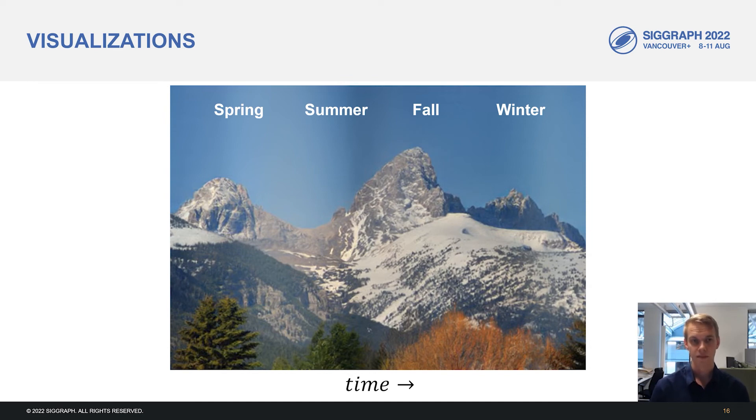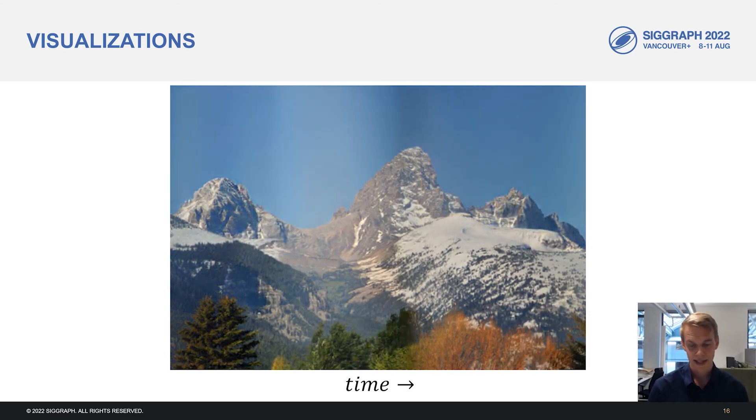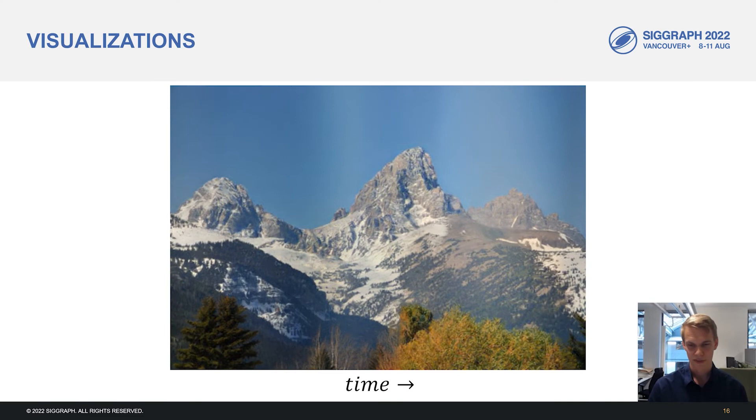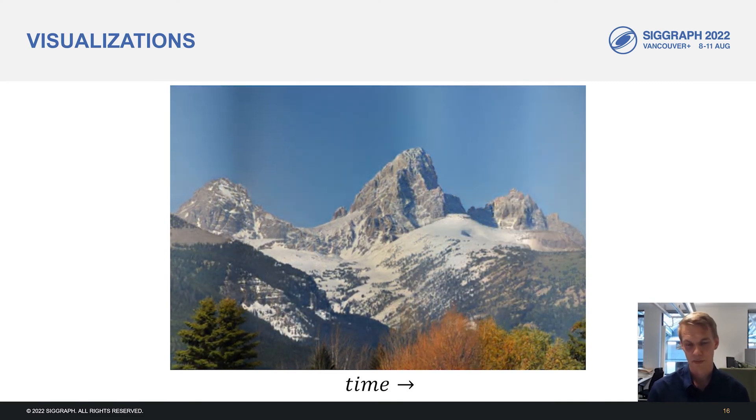So we can see spring on the left of the image, summer in the middle, fall on the right side, and then at the far right, we see winter conditions. We can also animate this over time. So here we can create an interesting visualization where the seasons appear to be shifting spatially across the image.